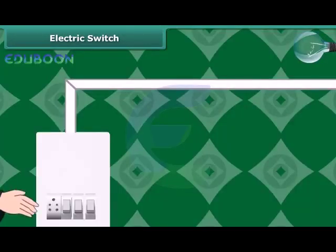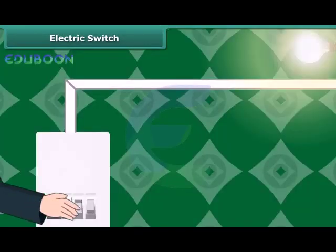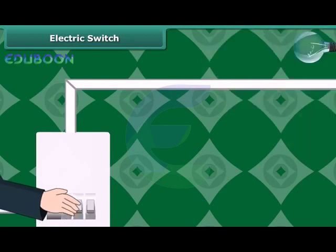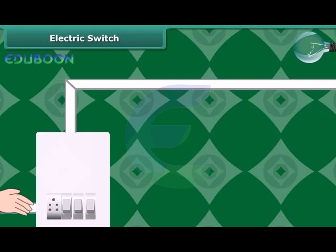A switch for a bulb is pressed down to complete a circuit. The bulb glows. To put the bulb off, we press the switch up. This breaks the circuit and the bulb glows no more.